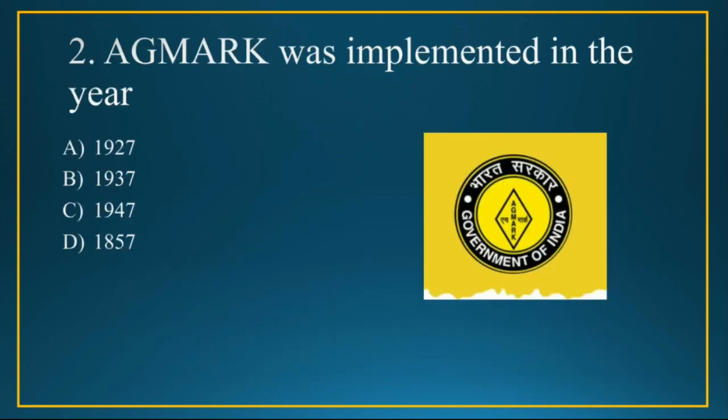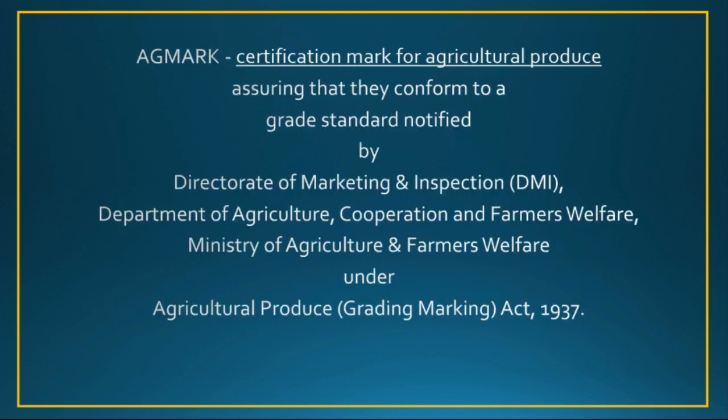Q2: Eggmark was implemented in which year? Eggmark is a certification mark for agricultural produce and it was implemented in the year 1937, so option B is the correct answer. The full form of Eggmark is the Agricultural Produce Grading and Marketing Act, and it is a product quality certification for over 222 agricultural commodities.